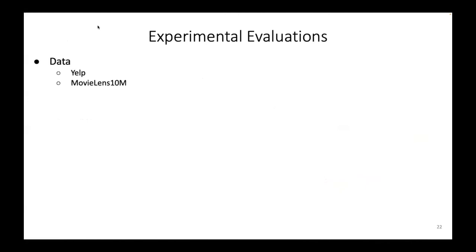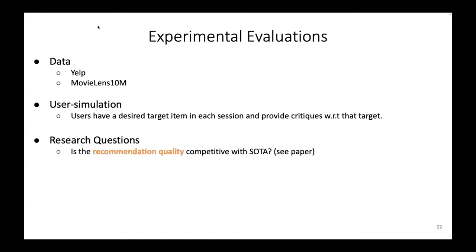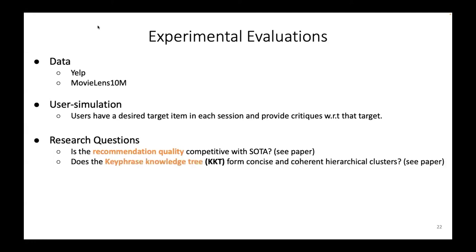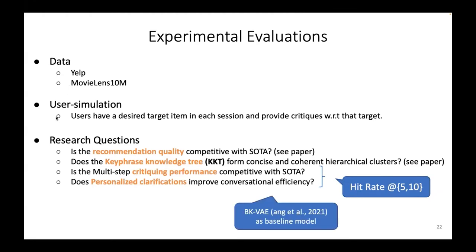For the experimental evaluation, we use two public datasets: the Yelp dataset and the MovieLens dataset. The experiment is performed under a user simulation setup where users have a desired target item in each session and provide critiques with respect to that target. We aim to answer: whether recommendation quality is competitive with state-of-the-art methods, whether the keyphrase knowledge tree forms concise and coherent hierarchical clusters, whether multi-step critiquing performance is competitive, and whether personalized clarifications improve conversational efficiency. We use hit rate at 5 or 10 as the metric, comparing DCVAE with BKVAE, an existing critiquing framework that also uses VAE-CF as its backbone.